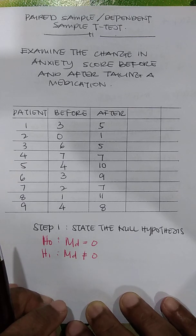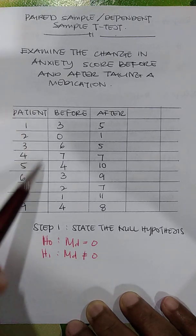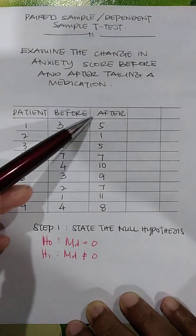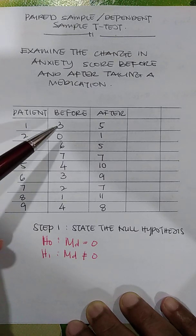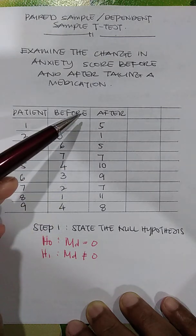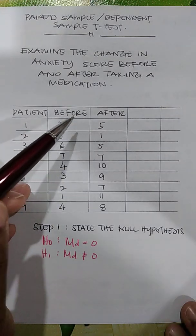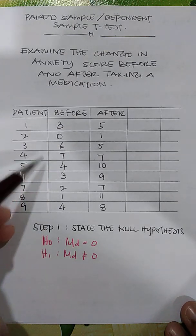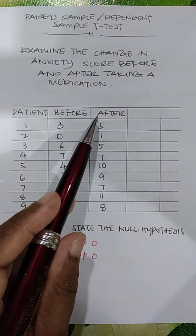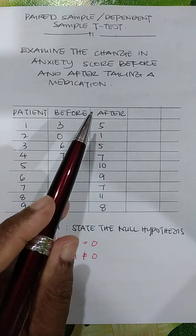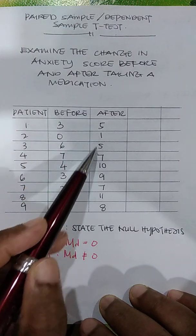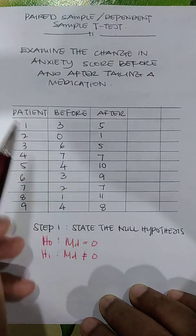What they did was they got the participants — about 9 patients — and measured every patient's anxiety scores before taking any medication. This 'before' is the original anxiety score of every patient. After that, they were given medication for about 4 weeks, and then their anxiety scores were recalculated for the same patients.